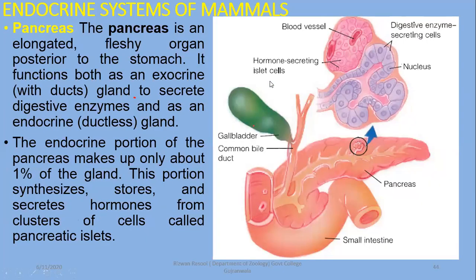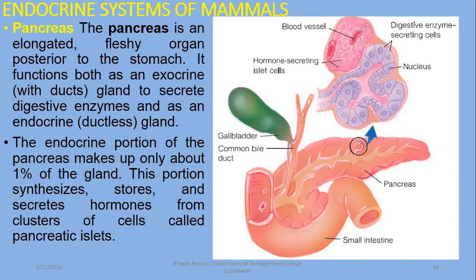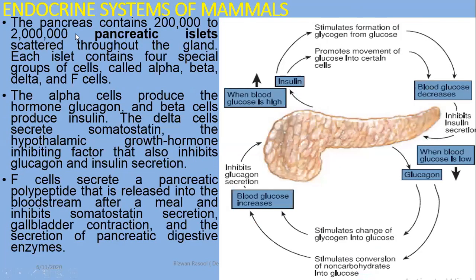The next gland we are going to discuss is the pancreas. The pancreas is an elongated fleshy organ posterior to the stomach. Most of the pancreas is exocrine — having ducts that secrete digestive enzymes. A small portion is endocrine — a ductless gland that produces insulin and glucagon, constituting just about one percent of the whole gland.